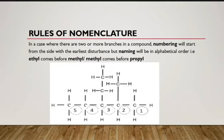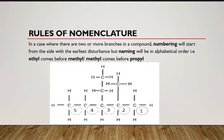In a case where there are two or more branches in a compound, numbering still starts from the side with the earliest substituent. However, naming must be done in alphabetical order — ethyl comes before methyl, and ethyl comes before propyl. So even though you number from the substituent closest to one end, you write the names in alphabetical order.